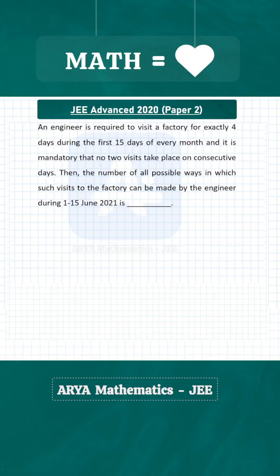There was one very interesting problem from the Tick and Cross method of permutation and combination in JEE Advanced 2020. An engineer is required to visit a factory for exactly 4 days during the first 15 days of every month, and it is mandatory that no two visits take place on consecutive days.